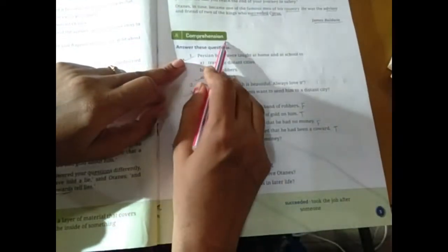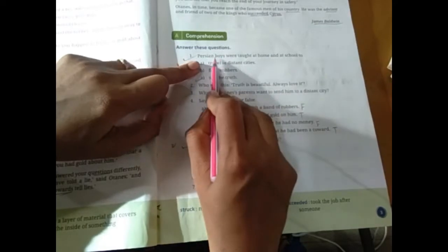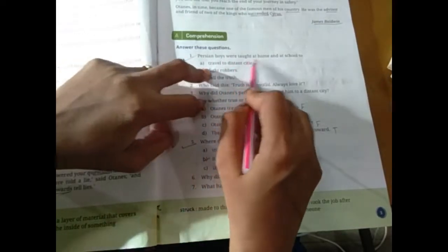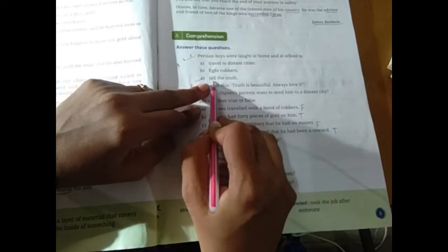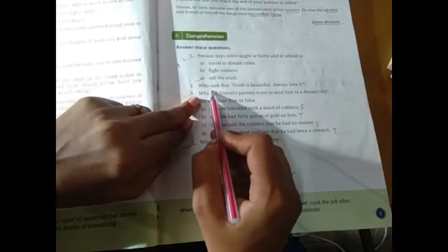Hortense in time become one of the famous men. He was the adviser and friend of two of the kings, who succeeded Cyrus. Comprehension. First, personal voice by God at home at school too. What do you think? That truth is.